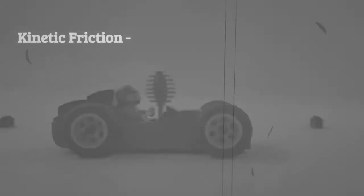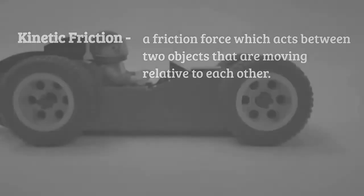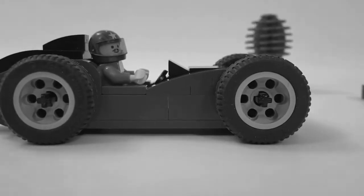Next, there's kinetic friction. Kinetic friction is a friction force which acts between two objects that are moving relative to each other. Kinetic friction occurs when two objects slide against each other, like when skidding your vehicle to a stop.